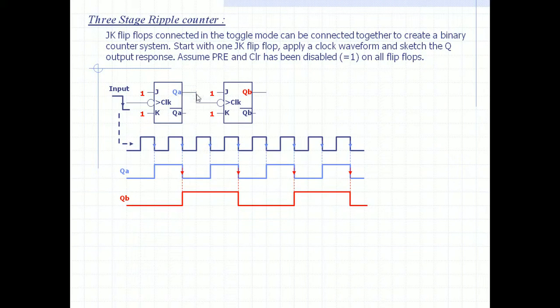At all falling edges of QA, which are marked in red with downward arrows, these arrows will toggle the output QB. Only transitions will take place here, here, here, and here.